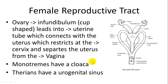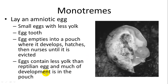Monotremes have a cloaca where the urinary, reproductive, and digestive tracts all meet in the same opening. Therians and metatherians have separate openings. Monotremes are unique in that they still retain the ancestral characteristic of laying an amniotic egg, though it is a little different from reptilian eggs.